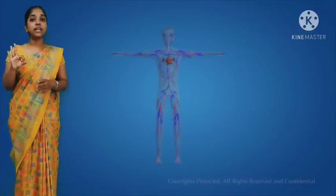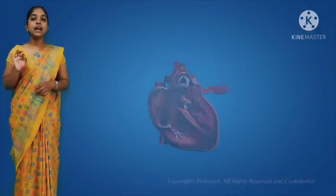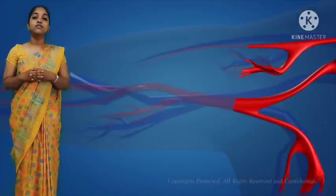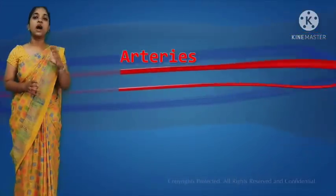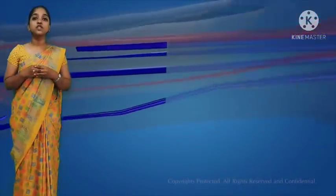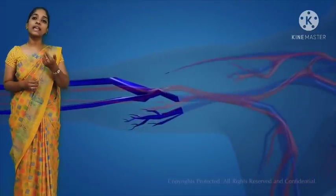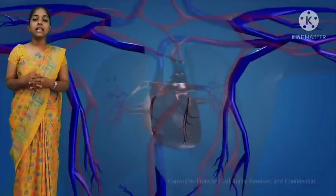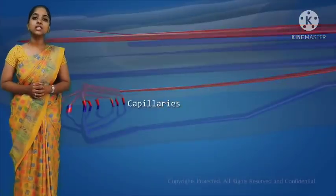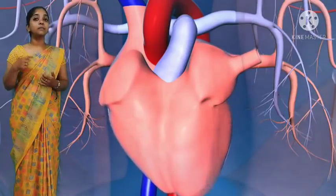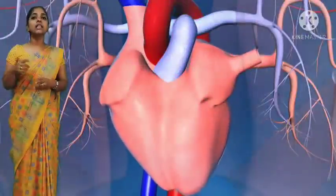Arteries are blood vessels which carry pure blood from the heart to all the parts of the body. Veins are blood vessels which carry impure blood from different parts of the body back to the heart. Capillaries are very thin blood vessels. So the three types are arteries, veins, and capillaries.